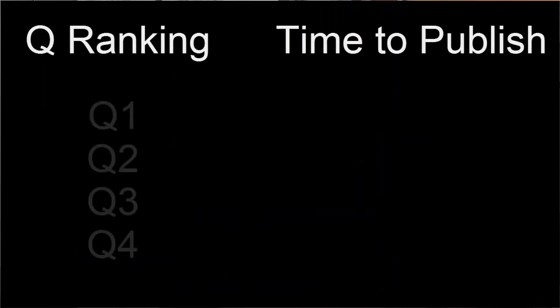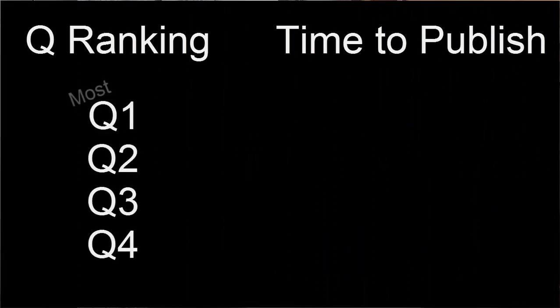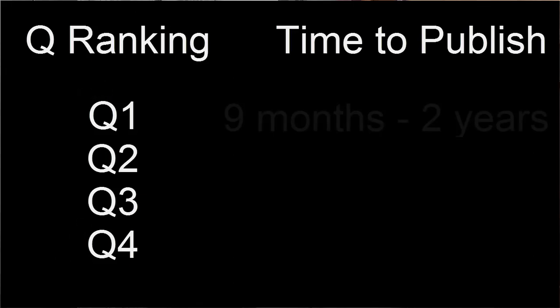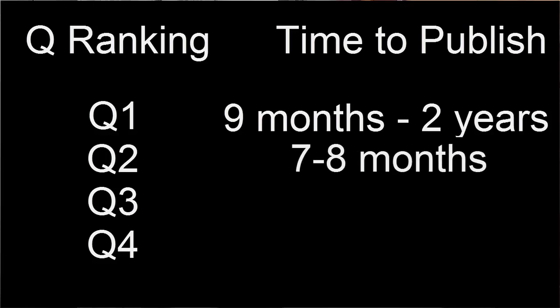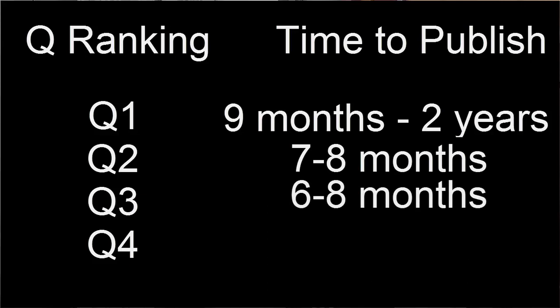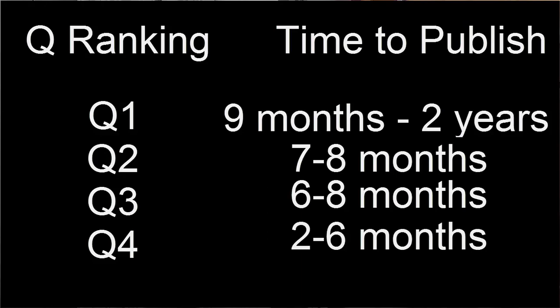Another difference among these journals is time to publish. A Q1 journal, having the highest impact factor, takes the most time to publish an article, while a Q4 journal takes the least. As a rough idea: a Q1 journal can take around 9 months to 2 years, a Q2 journal around 7 to 8 months, a Q3 journal around 6 to 8 months, and a Q4 journal around 2 to 6 months.